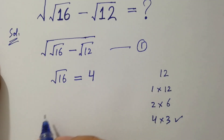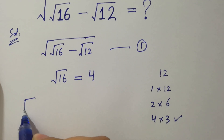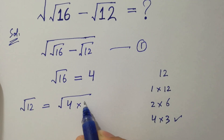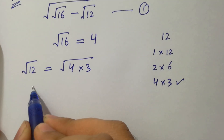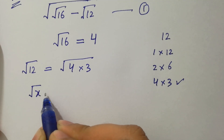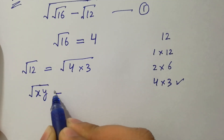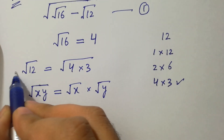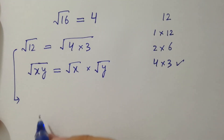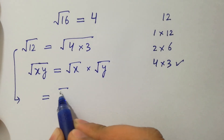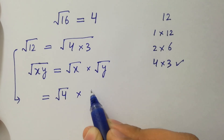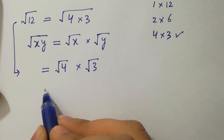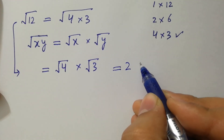So square root of 12 equals square root of 4 times 3. Since square root of x·y equals square root of x times square root of y, this becomes square root of 4 times square root of 3, which equals 2 times square root of 3.